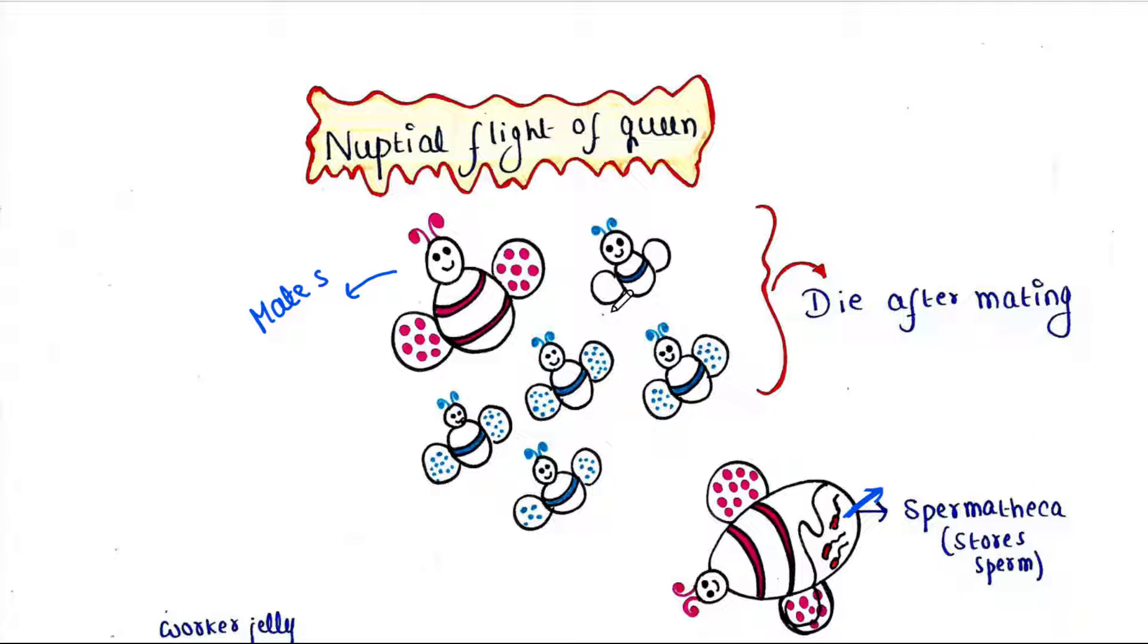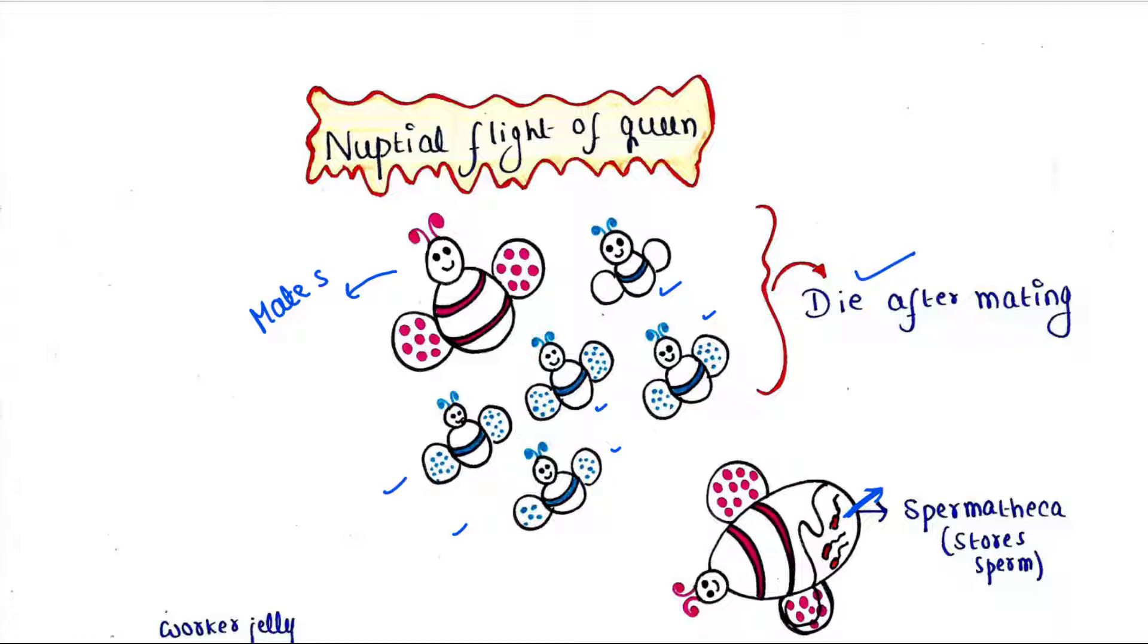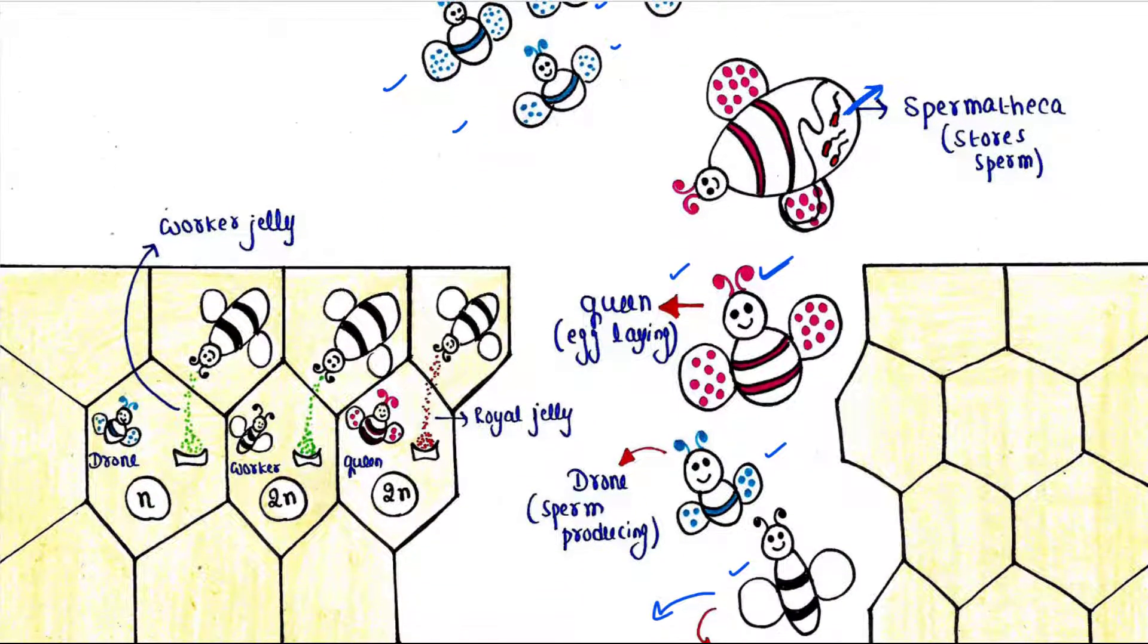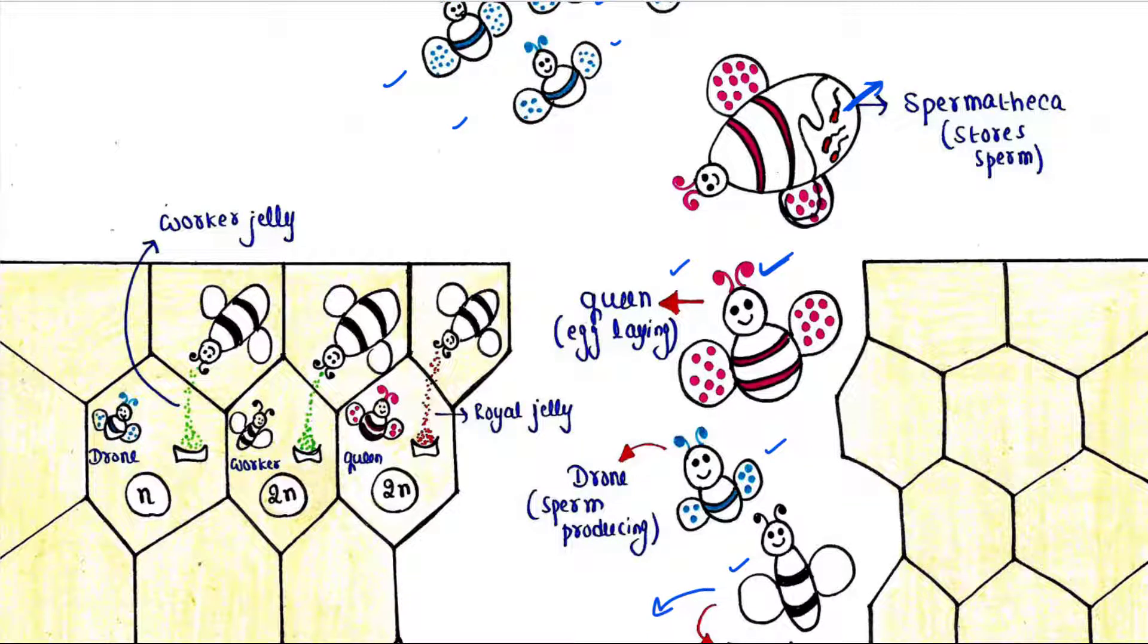Queens mate in the air with as many drones as possible. The only job of the drone is to mate with the queen, and soon after discharging their sperm, drones die. Worker honeybees are able to live for six weeks while queens can survive up to five years.